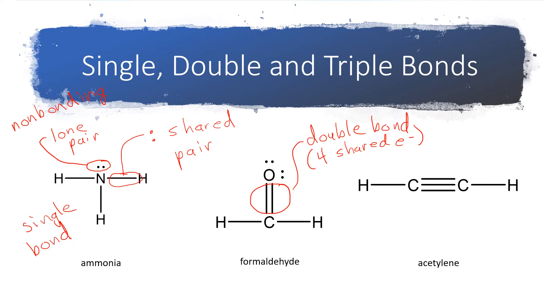Over here in acetylene, we actually have three pairs of shared electrons, and that's referred to as a triple bond. So a triple bond is six shared electrons or three shared pairs of electrons.